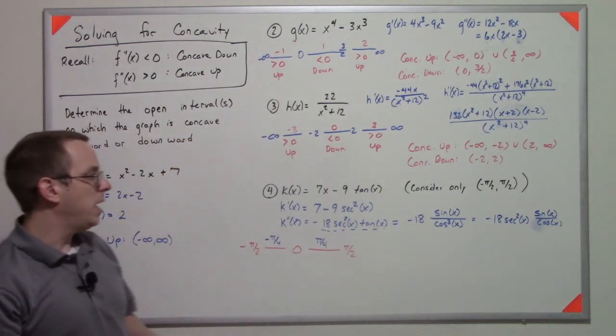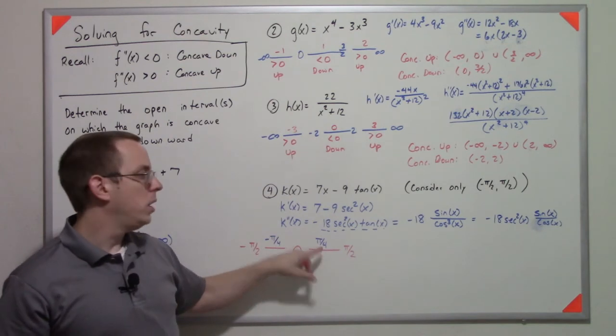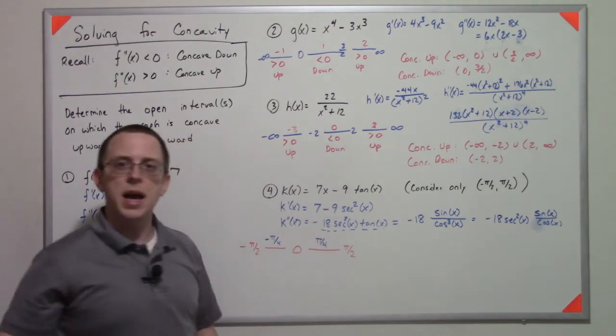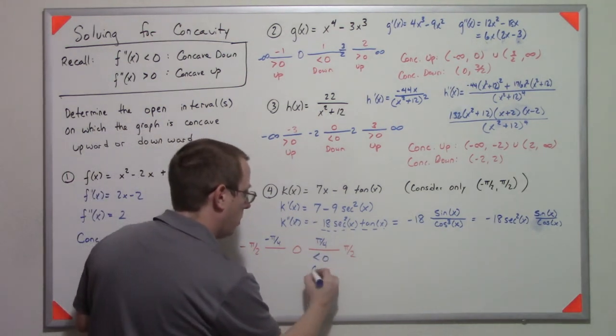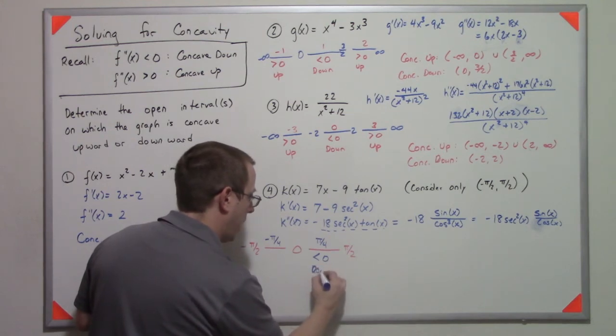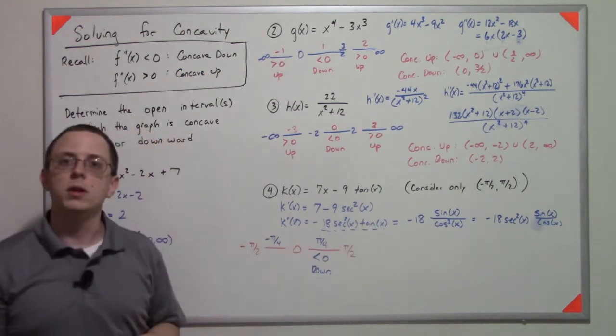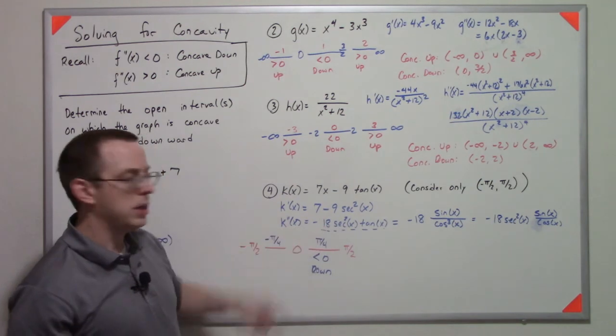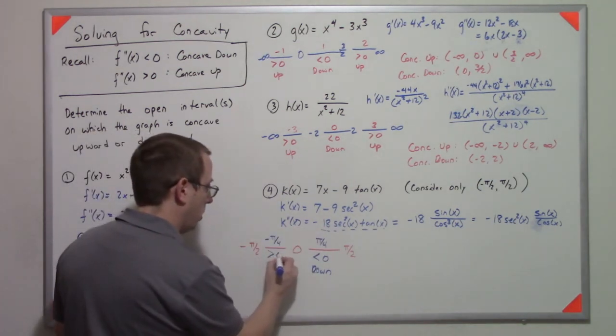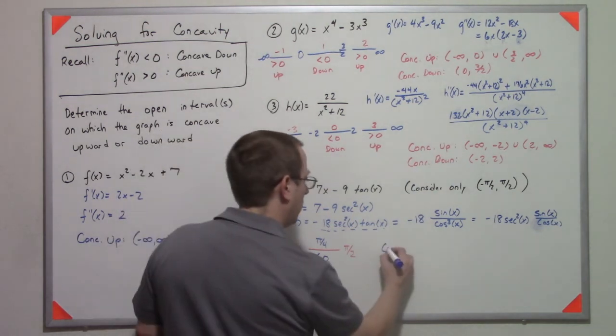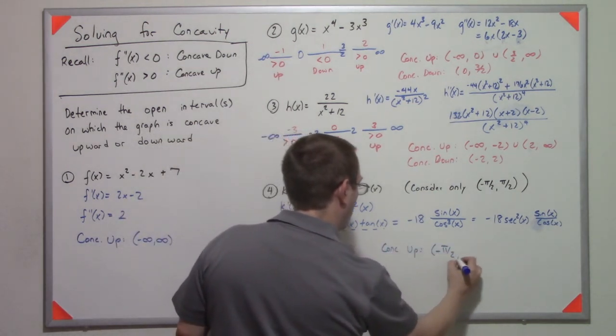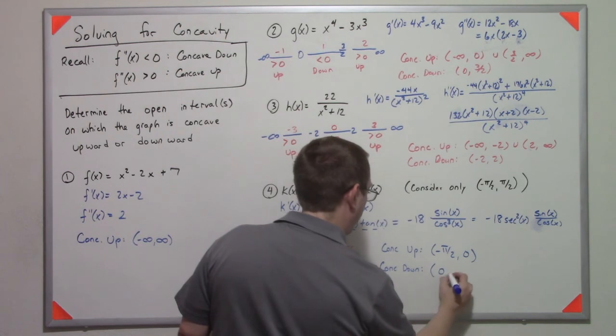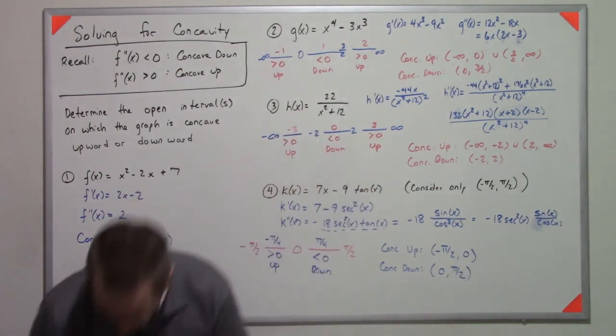Now what I know is that tangent of pi over 4 is 1. So that's 1, some positive number, times a negative number. So that tells me this is less than 0. That tells me this is down. If I plug in negative pi over 4, tangent of negative pi over 4 is negative 1, times a positive number, times negative 18 is a positive value. So this is concave up. And those are my values there.